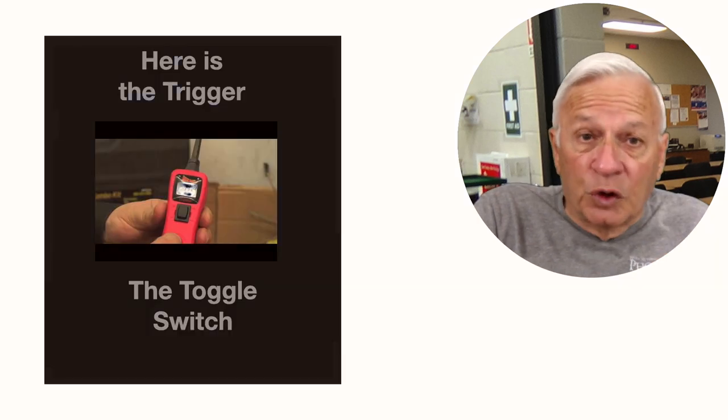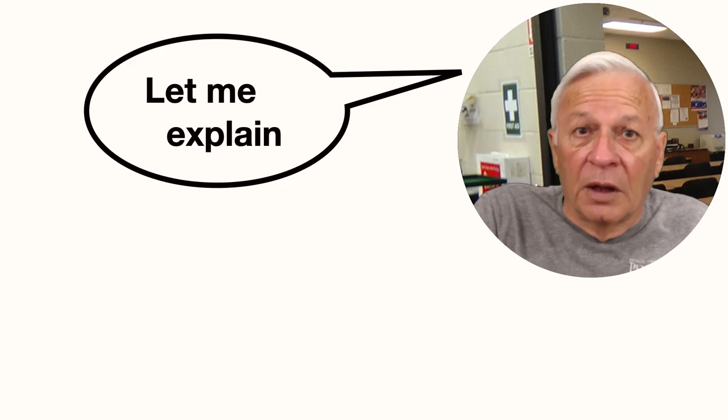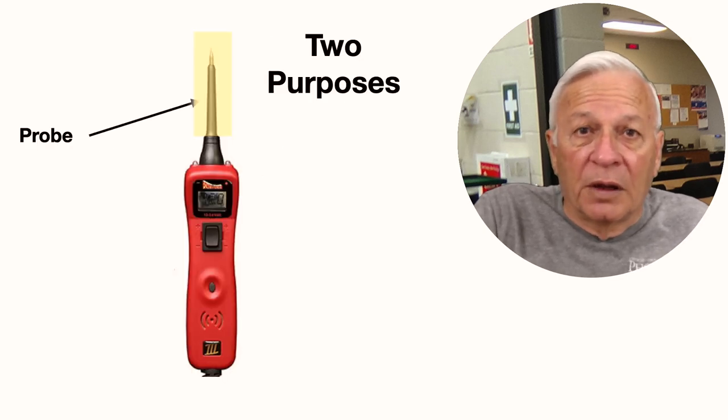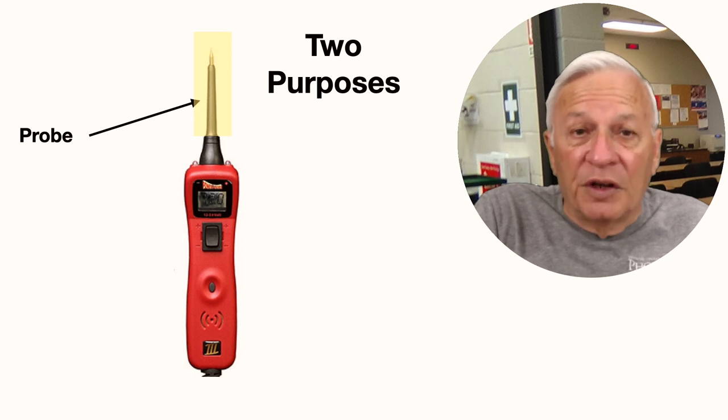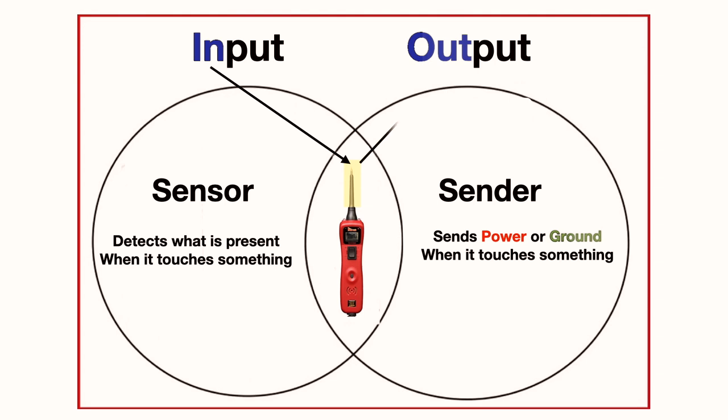Where is the trigger? It's the toggle switch. Now let me explain the basic parts of the tool. This is the probe, or the tip, and it has two purposes. The first purpose is a sensor. It detects what is present when it touches something. And the second purpose is a sender. It sends power or ground when it touches something.